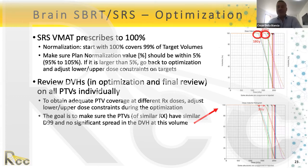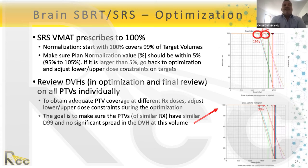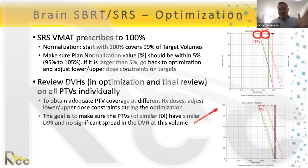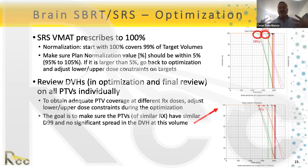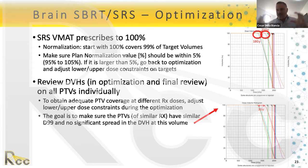For plan normalization in brain SRS — for example when normalizing so that 100% covers 99% of the volume — the normalization value in percentage should stay within ±5% of 100%. If you need to renormalize beyond 95–105%, go back to optimization and tighten the dose fall-off parameters rather than relying on renormalization.